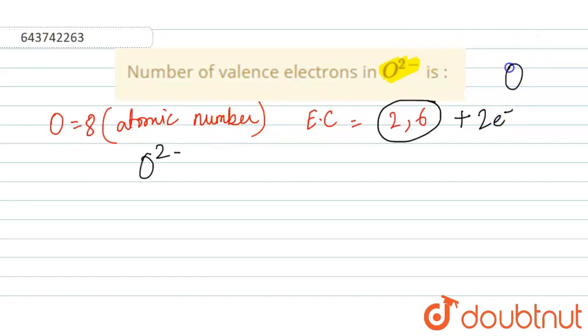First it was neutral. Then it gained 2 electrons to form O2-.